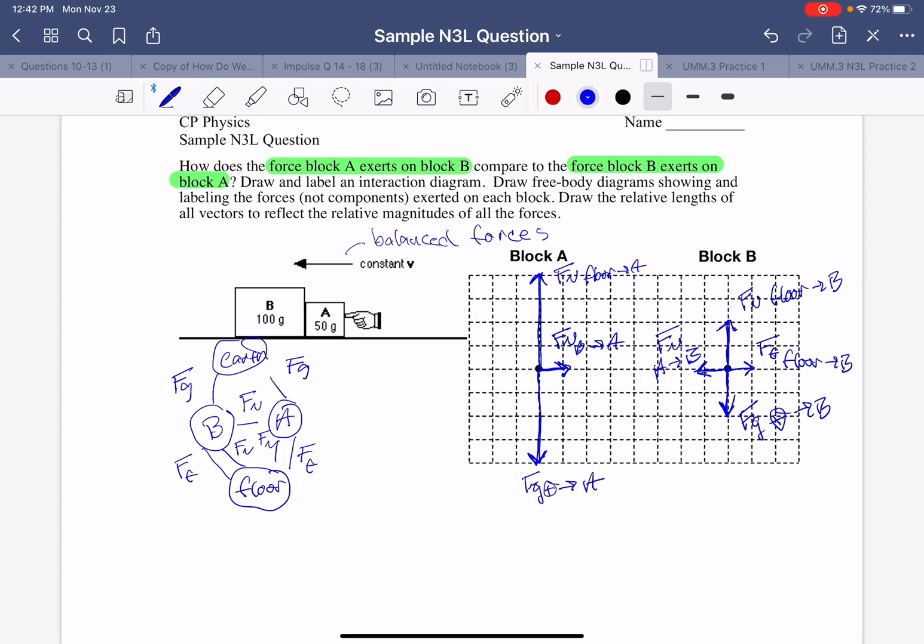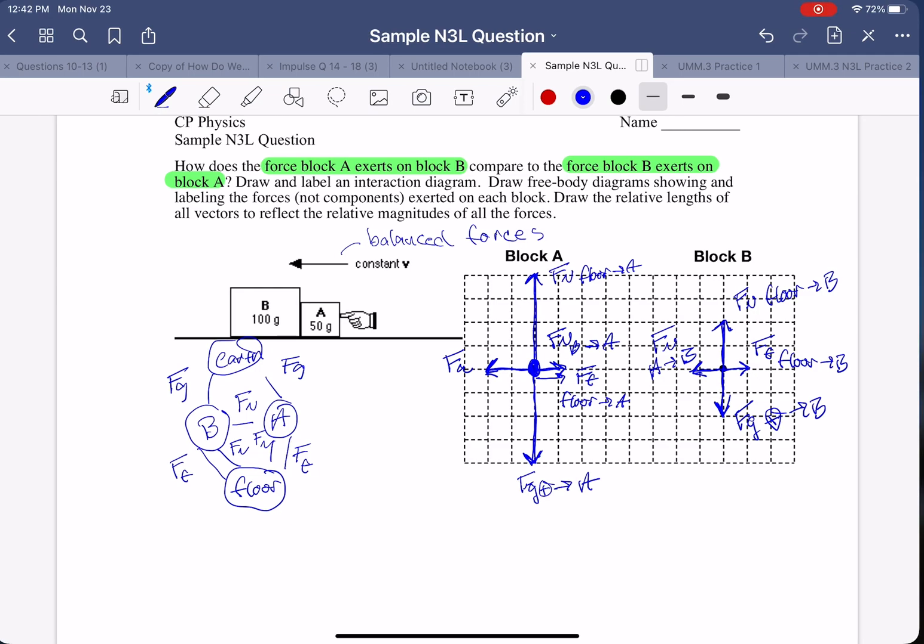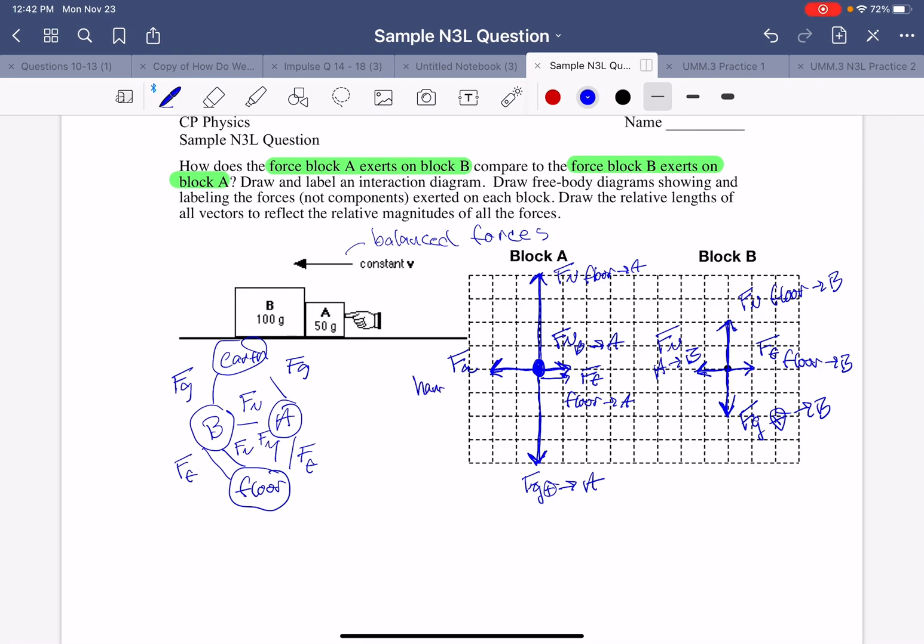I also have a friction force going to the right. So I'm going to make my dot a little bit bigger so I can have enough room to put a friction force of the floor on A to the right. And as I said before, the forces are balanced. So the force of the hand, the applied force of the hand, which is to the right, will have to be twice as big as either of those other forces to the right. So the applied force of the hand on A to the left is twice as big as the friction force and the normal force.